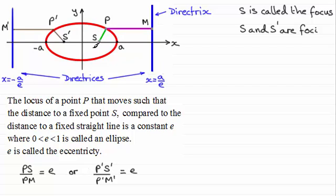The coordinates of the focus S—the x coordinate that is—is ae, the y coordinate will obviously be zero, and for S dash it is minus ae.